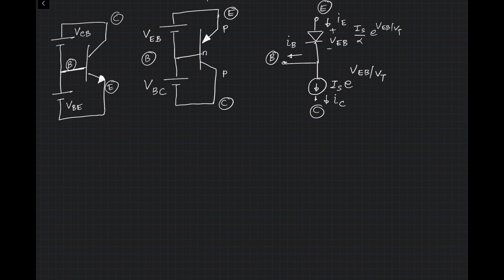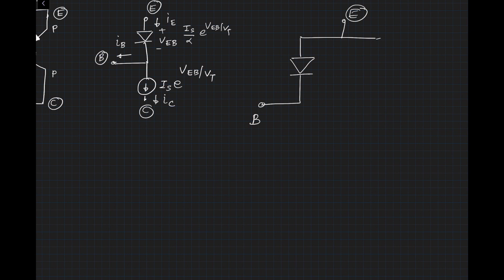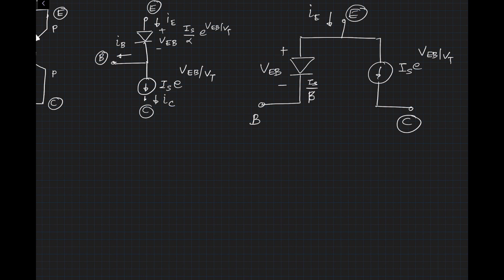In the second PNP model, base is drawn with emitter on top and collector to the side. The collector current is IS · exp(VEB / VT), with VEB as the positive potential across the emitter-base diode whose model saturation current is IS / β. IB flows out of the base and IE flows into the emitter. This is the large signal model for the PNP transistor.